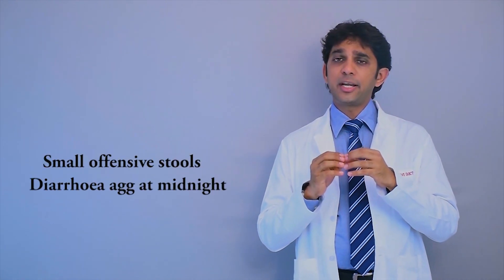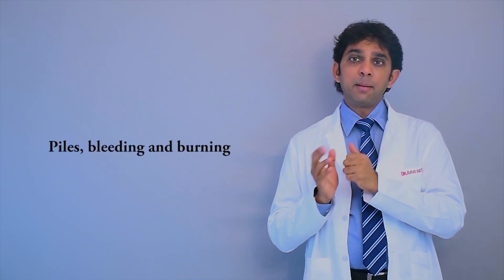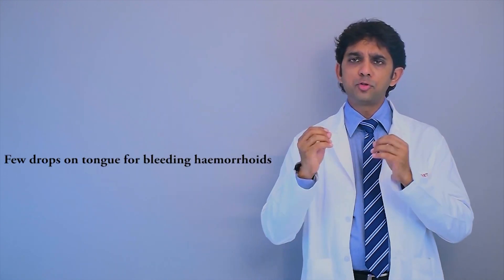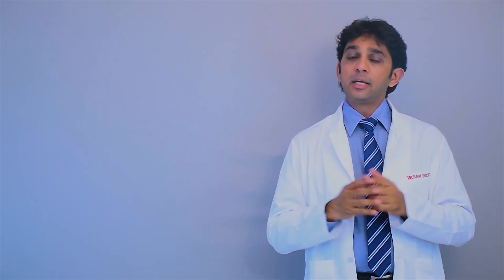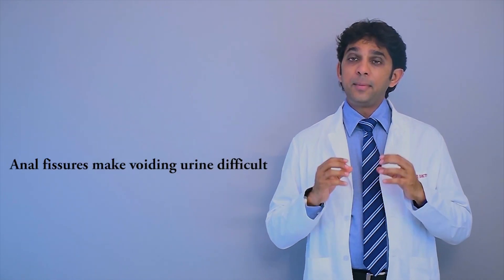Coming to the stools, in Arsenic the stools are small, offensive, and the diarrhea which is aggravated at midnight but with complete prostration. Please remember, Arsenic comes with complete prostration. In piles, bleeding and burning is again better application of heat. In one of our clinical seminars, I remember one of the legends in homeopathy, Dr. Vardia, used to actually give Arsenical for only bleeding piles and wonders it works. Few drops of Arsenic on tongue and actually it can stop bleeding. Coming to urinary complaints, they have a very peculiar aggravation modality: fissures making voiding urine difficult. This includes the symptoms of the GI tract and the urinary symptom.